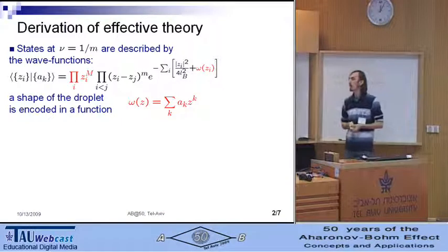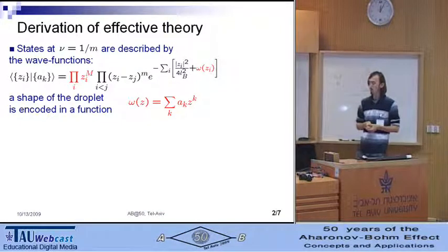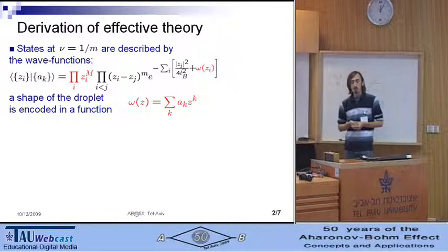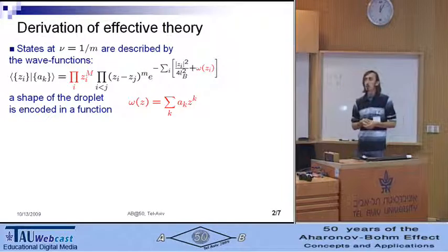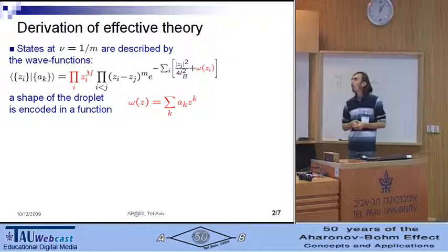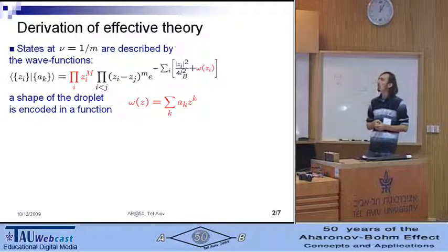Which looks as a contradiction with the naive argument. Okay, to resolve this paradox, we follow several steps. First of all, we microscopically derive the effective theory of quantum Hall liquid in presence of changing magnetic flux.